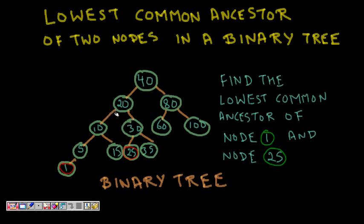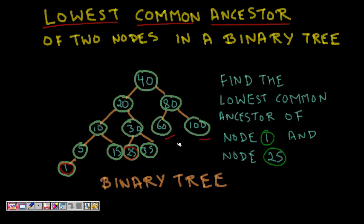The challenge problem for today is to find the lowest common ancestor of two given nodes in a binary tree. You are given a binary tree — not a binary search tree, just a binary tree — and two nodes, and you have to find their lowest common ancestor. For example, the lowest common ancestor of 60 and 100 is 80. The ancestor of 15 is 10, 20, and 40.